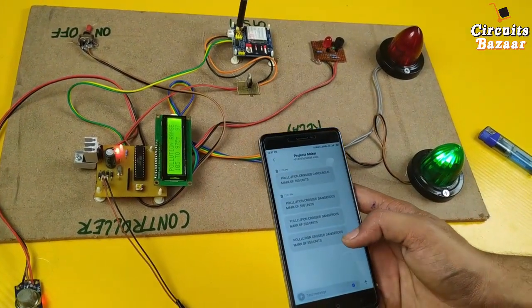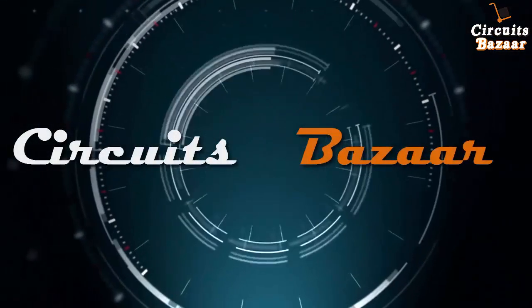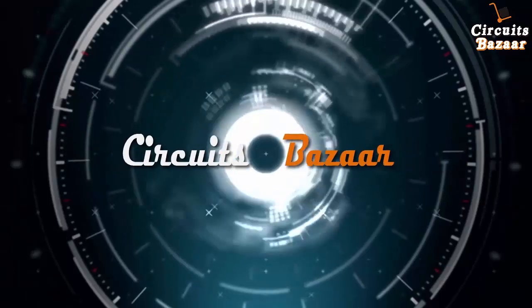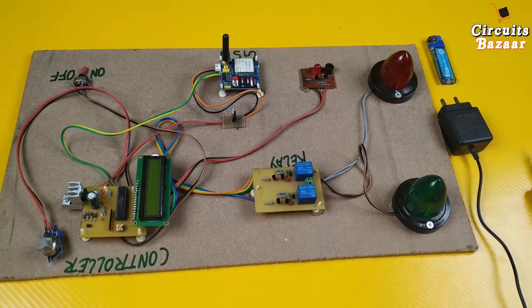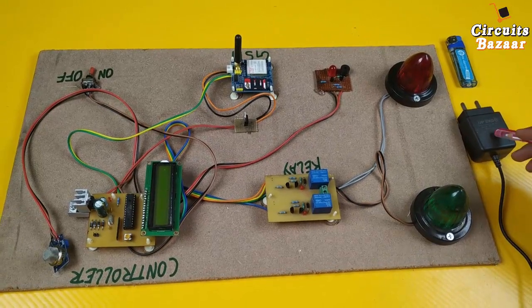The message is: pollution crossed dangerous mark of 550 units. Hello friends, I hope all are doing great. Today we are going to study the project Advanced Pollution Monitoring of Vehicles.